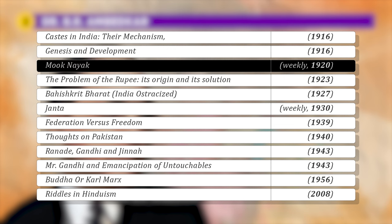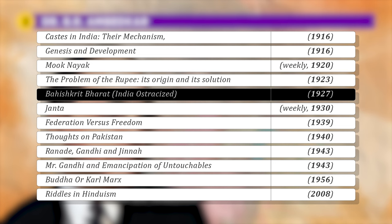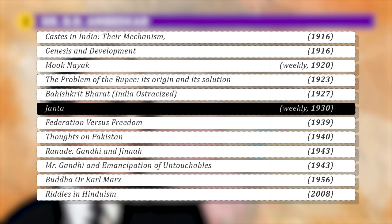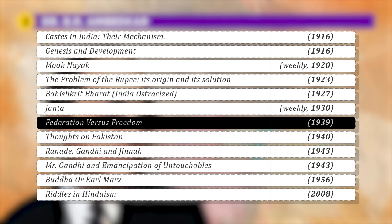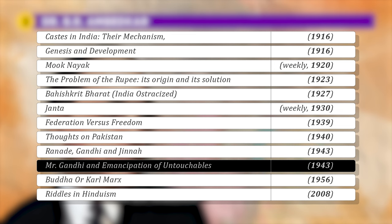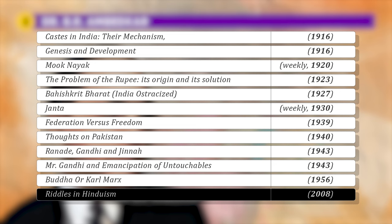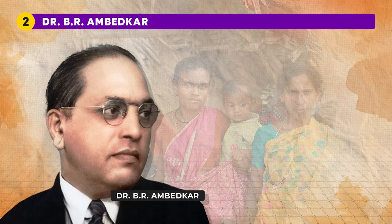Ambedkar's further works include The Problem of the Rupee (1923), Bahishkrit Bharat — India Ostracized (1927), Janta, a weekly from 1930, Federation versus Freedom (1939), Thoughts on Pakistan (1940), Ranade, Gandhi and Jinnah (1943), Mr. Gandhi and the Emancipation of Untouchables (1943), Buddha or Karl Marx (1956), and Riddles in Hinduism (2008). Through his prolific writings and tireless advocacy, Ambedkar's legacy continues to resonate, inspiring movements for social justice and equality across India and beyond.